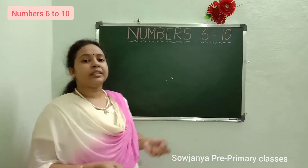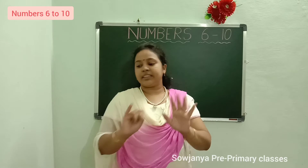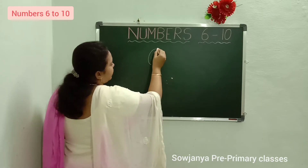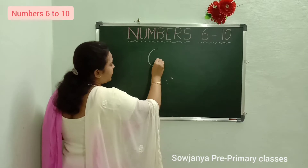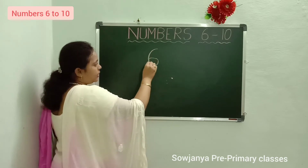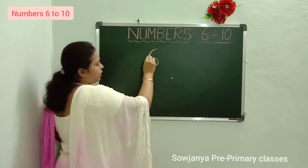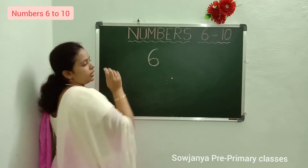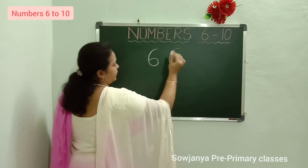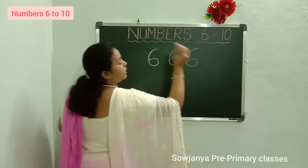Now what is the number? 6. How to write 6? First write a curve like this. Write a curve and put a small circle inside, like this. 6. Write curve and put a small circle inside. Right curve and put a small circle to this. 6.